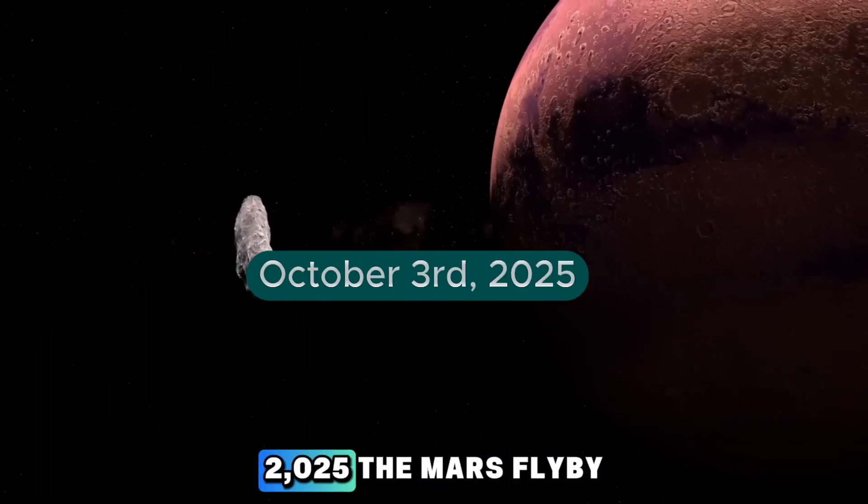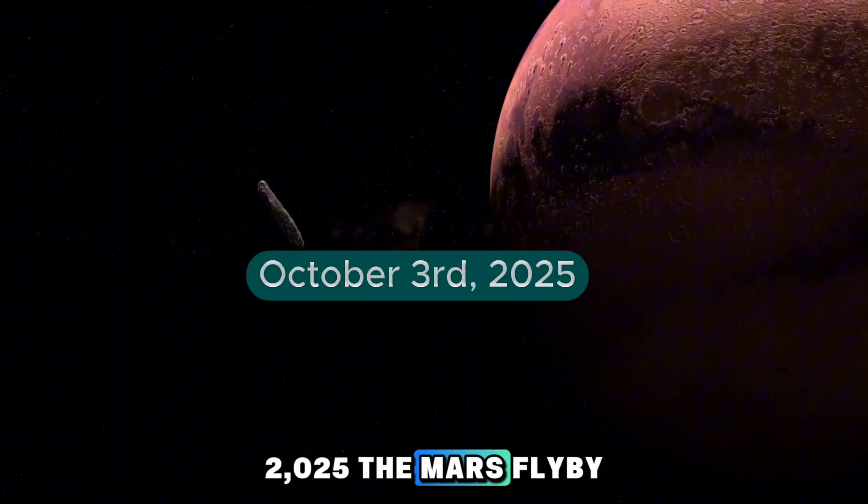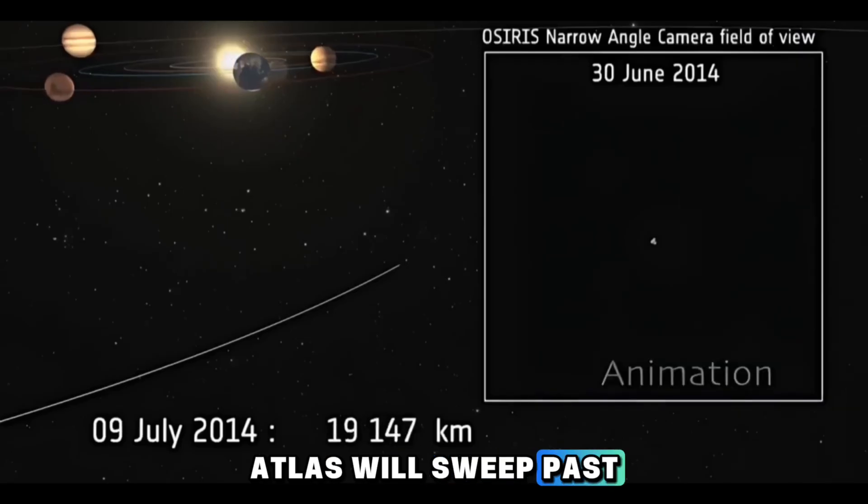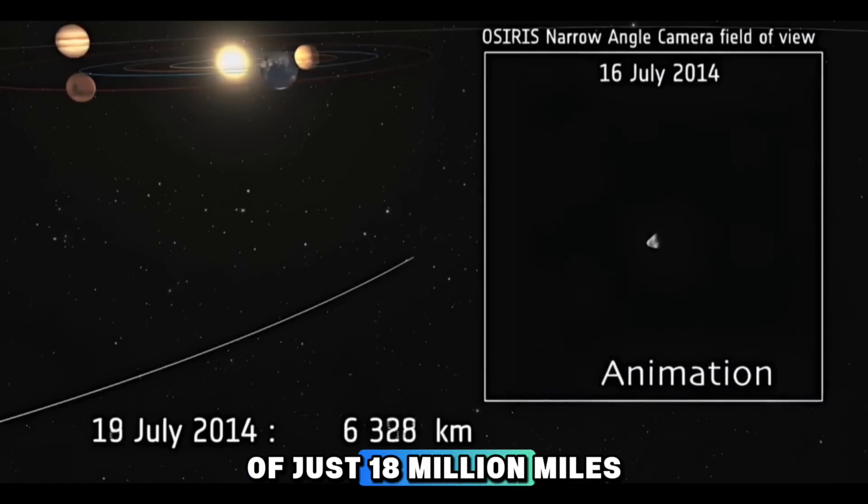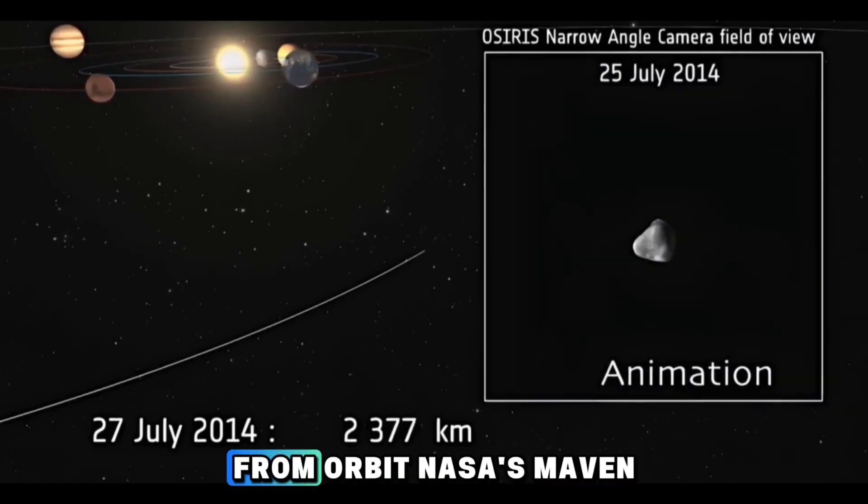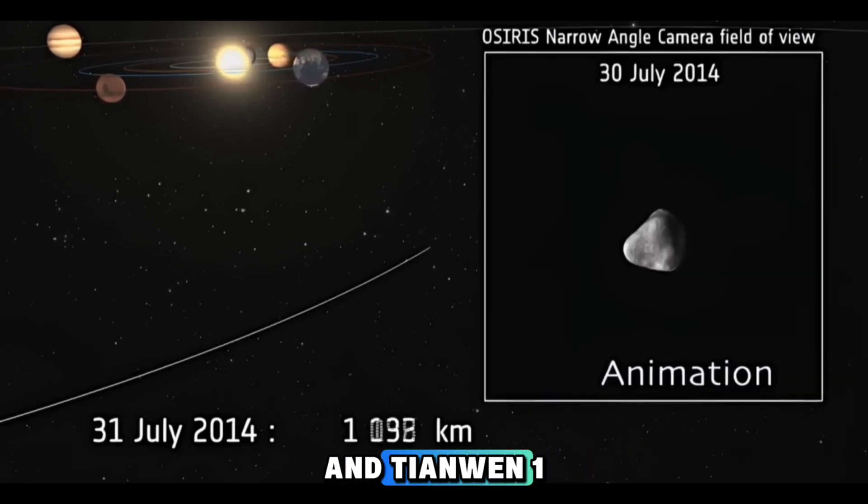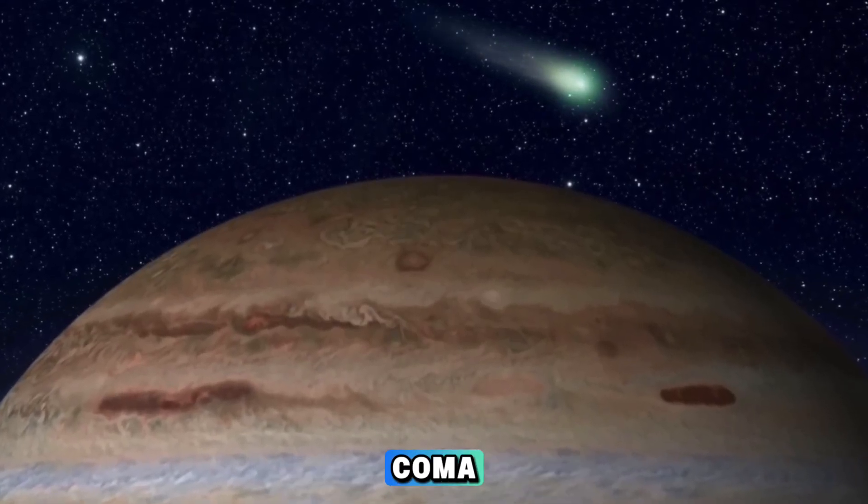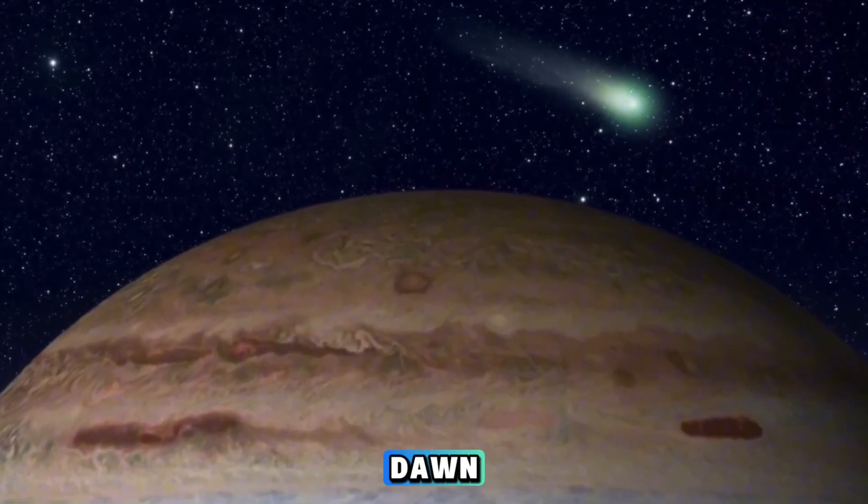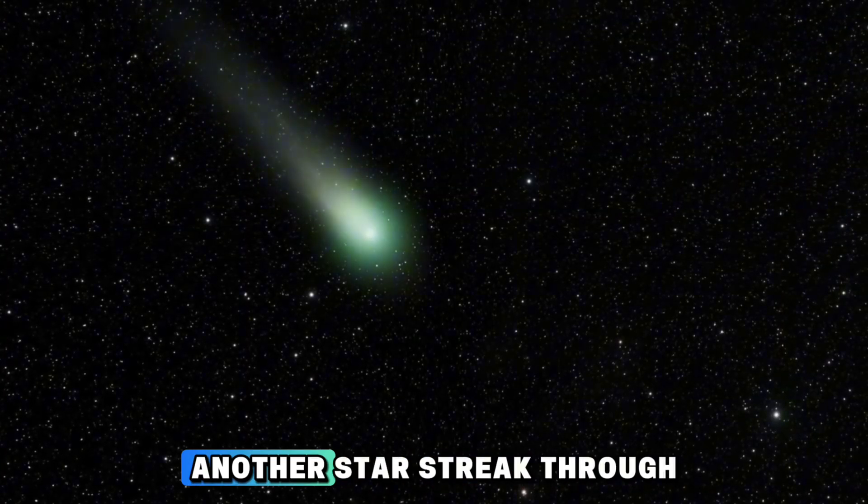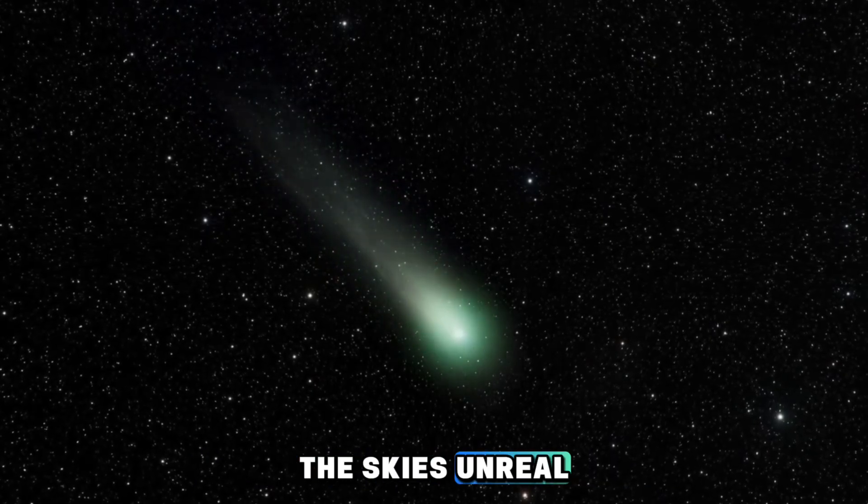October 3rd, 2025. The Mars Flyby. Just after sunrise over Valles Marineris, Atlas will sweep past Mars at a distance of just 18 million miles. That's cosmic hair thin when it comes to space. From orbit, NASA's MAVEN and Tianwen-1 are expected to catch the first close-up glow of its dusty coma, a faint pink shimmer rising with the Martian dawn. Imagine standing on that red desert, watching a comet from another star streak through the skies. Unreal.